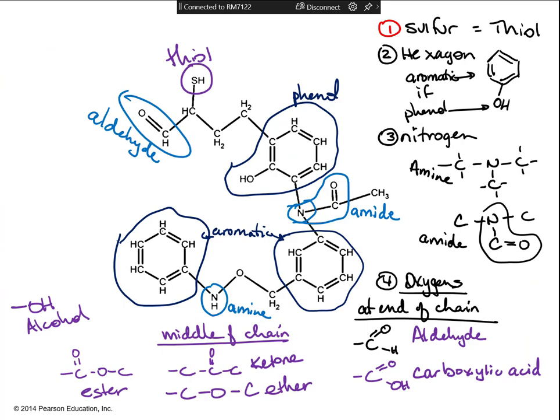Everything not circled is nothing but carbons. There's one oxygen — an oxygen in a chain. The oxygen in the chain is an ether — that's when you have an oxygen that's actually part of the chain, like carbon-oxygen-carbon, not one sticking up like a ketone or an aldehyde.